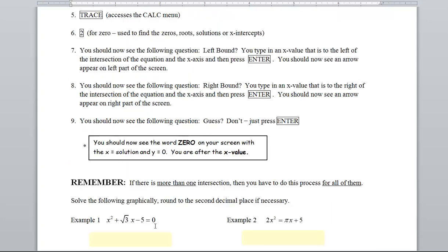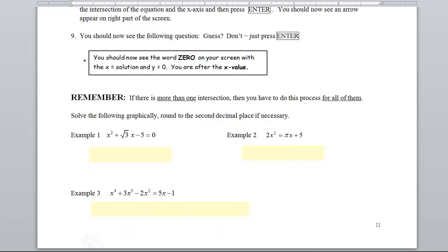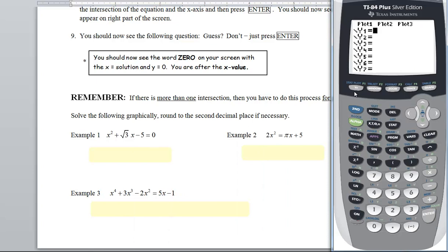So solve the following graphically, round to the second decimal place if necessary. I've got to go back to y equals. In this particular problem everything's over to the left, I see 0 on the right. So let's type this in. I've got x squared plus square root of 3. Only the 3 is under the radical, so I've got to close that parentheses so the calculator understands that. Minus 5. Now let me ask it to graph. It hits my x-axis in two places.